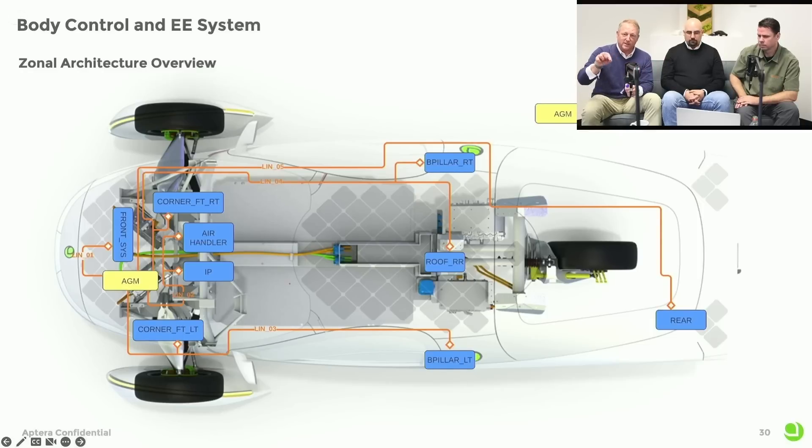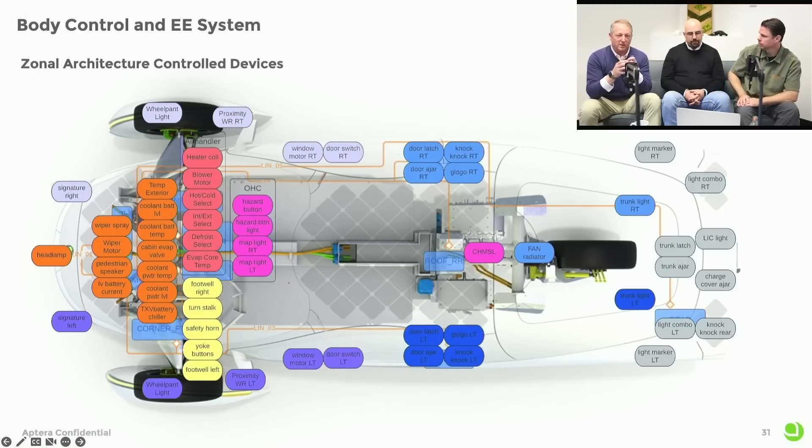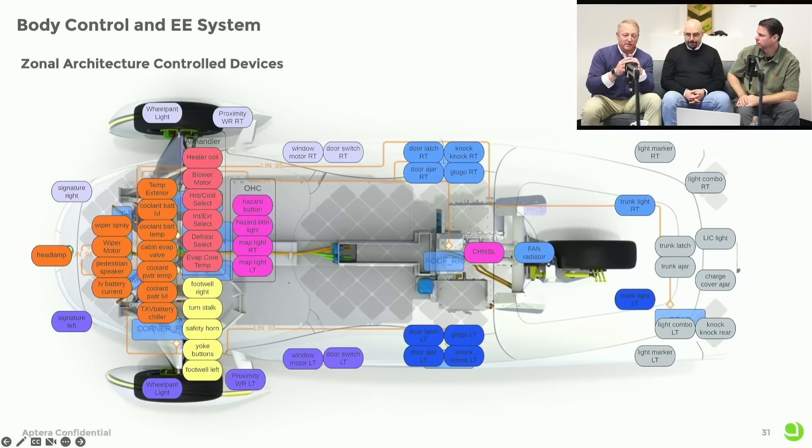Instead of a wiring harness that goes everywhere, we have a very small harness that connects these point-of-use controllers—POUC—that we call. And the POUC has a common architecture, hardware and firmware stack that we developed that's the same for every one of them. It's abstracted, so it's only the small I/Os, whether it's digital inputs or outputs or analog inputs or outputs, that change based on the specific need.